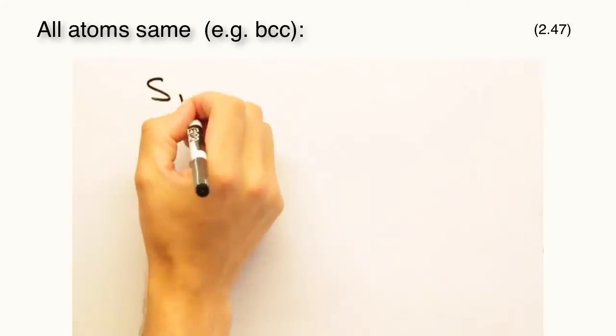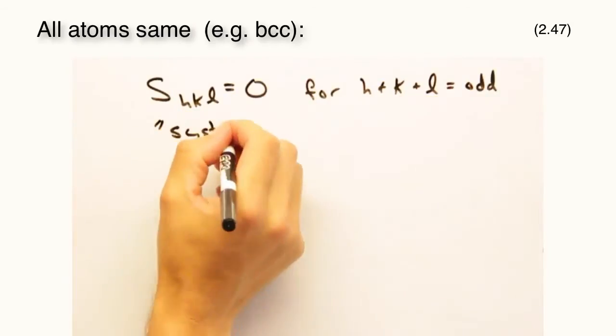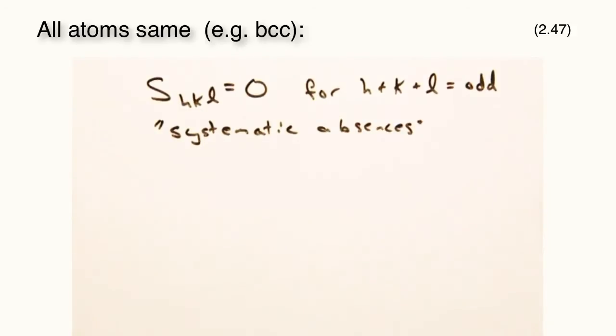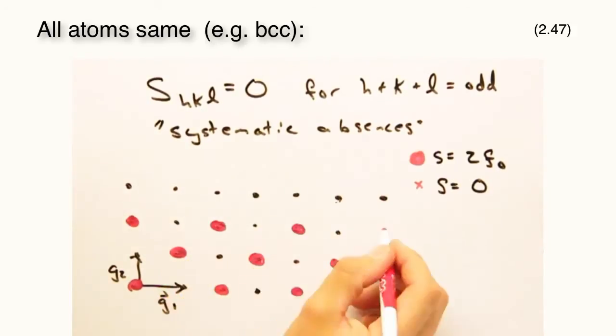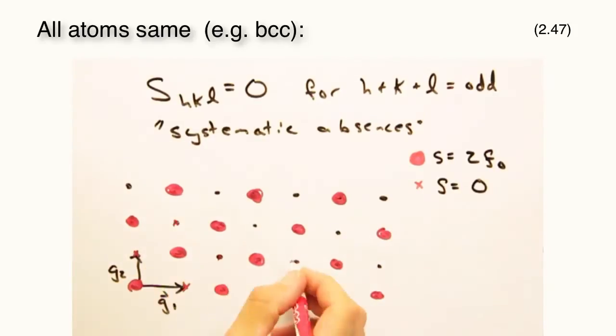In the case where all the atoms are the same, we should see systematic absences in our reciprocal lattice as shown in this g3 equals half slice of a BCC cell.